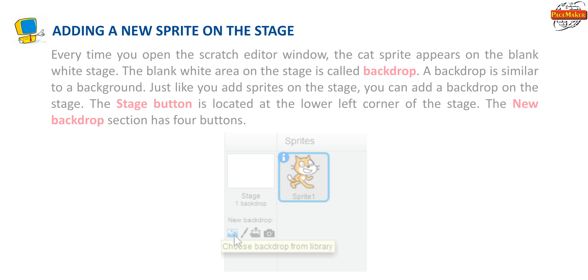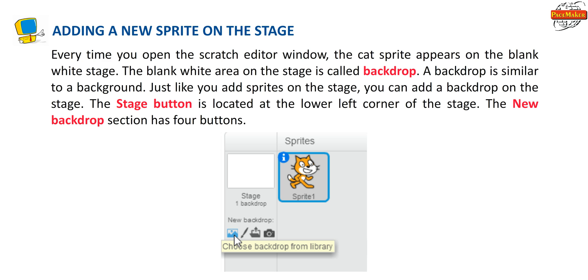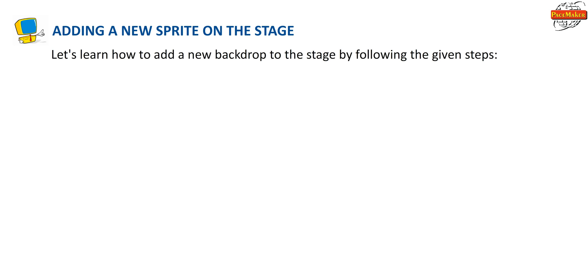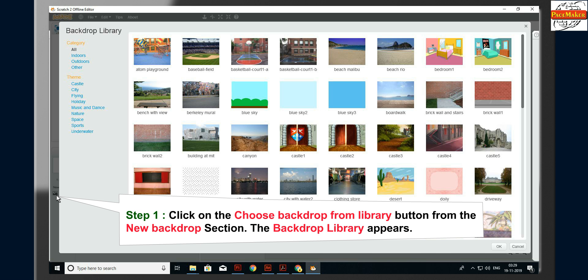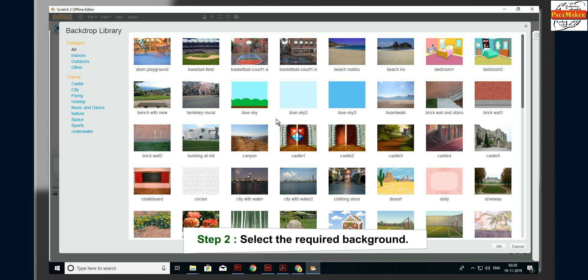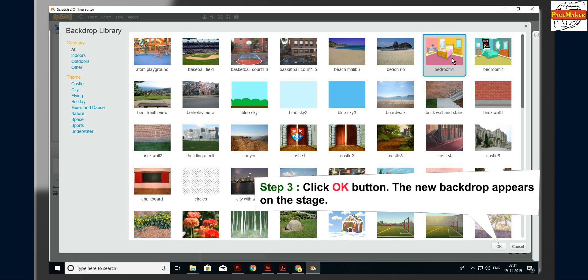Every time you open the Scratch Editor window, the cat sprite appears on the blank white stage. The blank white area is called a Backdrop, which is similar to a background. Just like you add sprites, you can add a backdrop on the stage. The new backdrop section has four buttons and is located at the lower left corner of the stage. To add a new backdrop: Step 1, click Choose Backdrop from Library; the backdrop library appears. Step 2, select the required background. Step 3, click OK. The new backdrop appears on the stage.